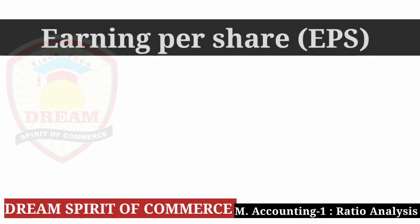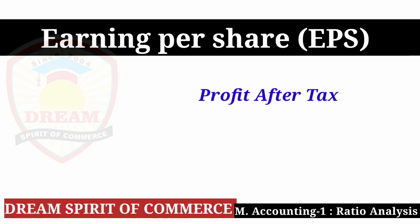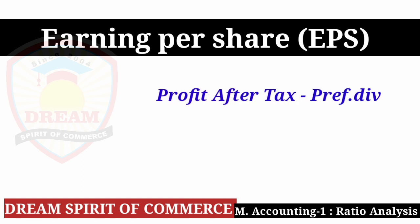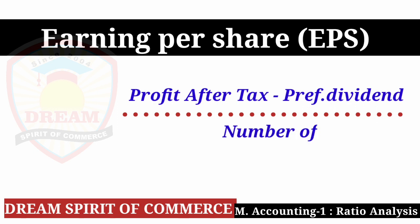Now Earning Per Share (EPS): EPS — E for Earning, P for Per, S for Share — equals Profit After Tax minus Preference Dividend, divided by Number of Equity Shares.